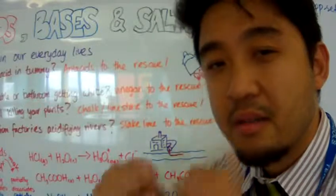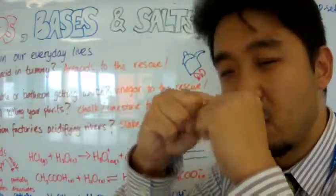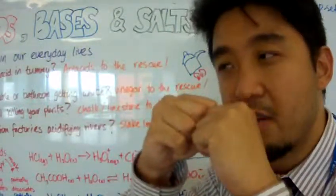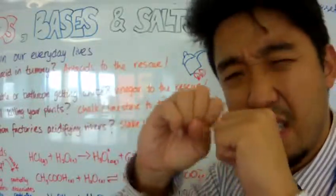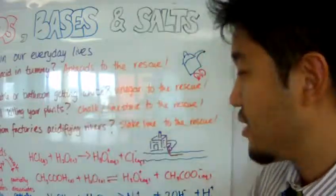For weak acids, the ions, both of them, will stay together in its molecular form, but some of that will dissociate. So only some of it will break apart.